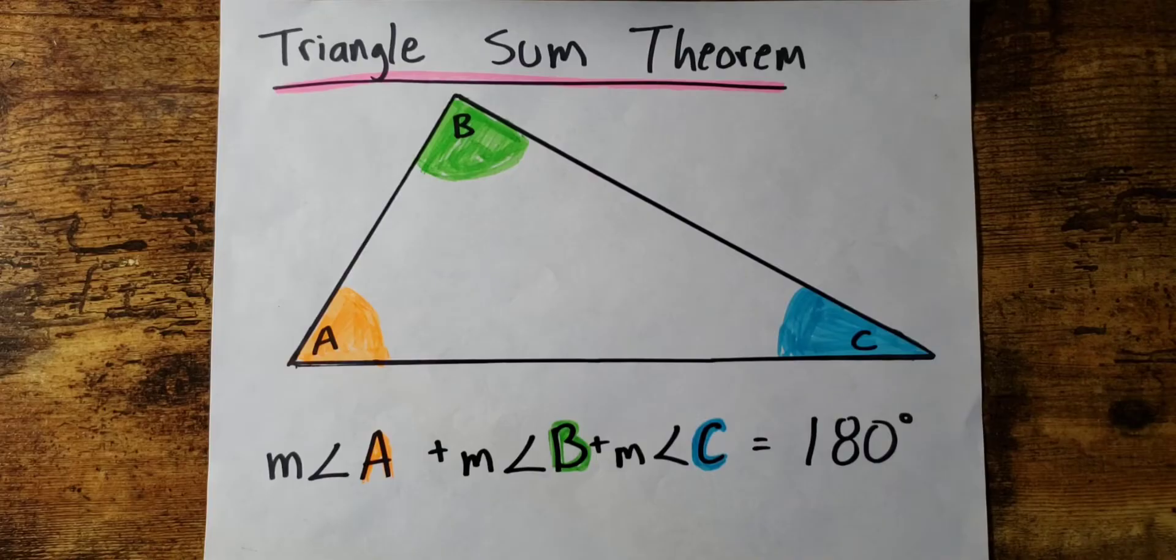This works for any type of triangle: isosceles, equilateral triangles, scalene triangles. If you add up all the measurements of all the interior angles, you should get 180 degrees.